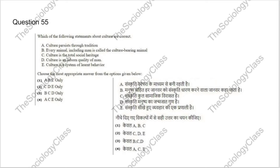Question 55: Which statements about culture are correct? Options: culture persists through tradition; every animal including man is called the culture-bearing animal; culture is the total social heritage; culture is an inborn quality; culture is a system of learned behavior. The correct answer is D — A, C, and E are correct. Only humans bear culture, and culture is learned through socialization, not inborn.